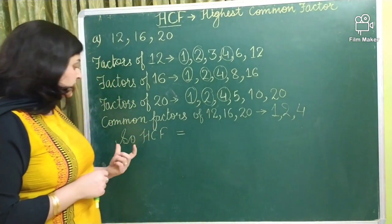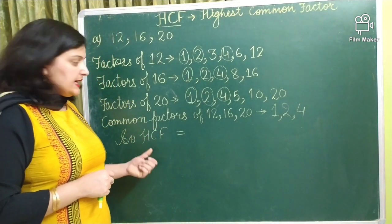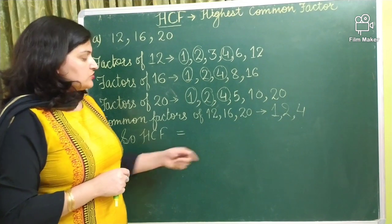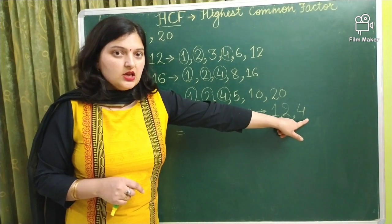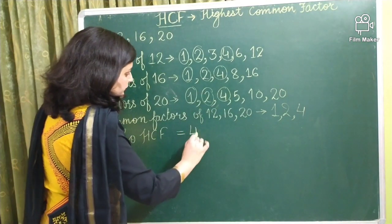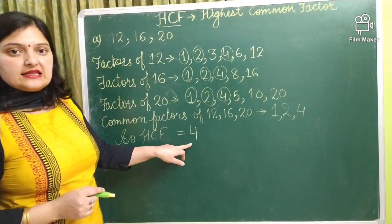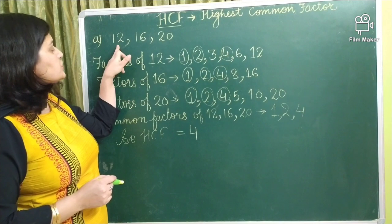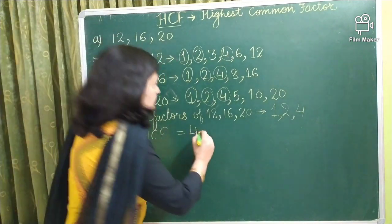Now we have to find out HCF means highest common factor. So among all these 3 factors which one is highest? 4 is the highest one. So we can say that 4 is the HCF of 12, 16 and 20.